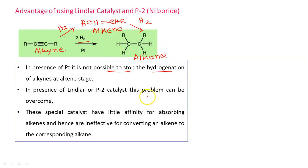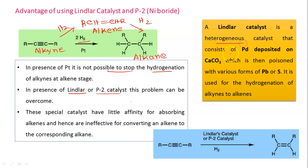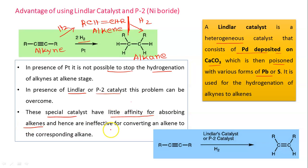To stop hydrogenation at the alkene stage, we can reduce the effectiveness of the catalyst. This new catalyst is the Lindlar catalyst or P2 catalyst. Lindlar catalyst is a heterogeneous catalyst consisting of Pd deposited on calcium carbonate, poisoned with various forms of lead or sulfur. Poisoning reduces catalyst effectiveness, lowering its selectivity. This special catalyst has little affinity for absorbing alkene, so the reaction stops at the alkene stage.